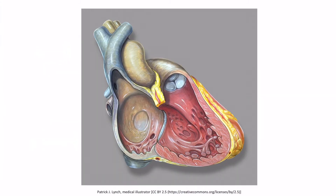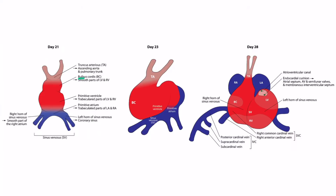Here's an image of the inside of an adult heart, and we can see some bumpy areas — these are trabeculated — and we can also see some smooth areas. The bulbus cordis will become the smooth parts of the ventricles, and the primitive ventricle and primitive atrium will become the trabeculated portions of the ventricles and atria, respectively. Additionally, the right horn of the sinus venosus will become the smooth part of the right atrium, and the left horn of the sinus venosus will become the coronary sinus. Finally, the truncus arteriosus will become the ascending aorta and pulmonary trunk.